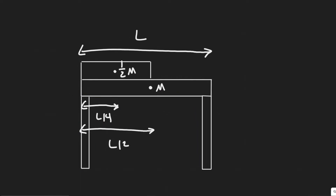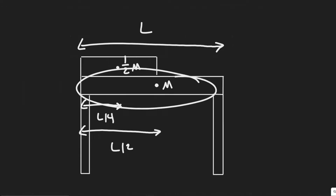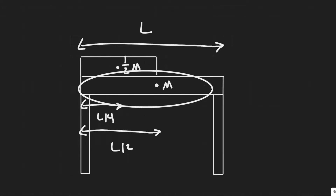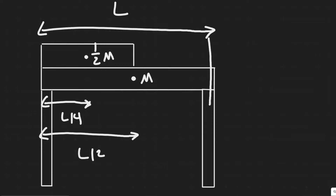I went ahead and drew our system here. We have these two support beams, and then we have this steel beam laying across here. Then half of an identical beam is laying on the side like this. They're asking us to find the vertical support force at each end — there's going to be a force pointing up on each end supporting it. We can call it FA for this one and FB for the other one. We're trying to solve for both of these forces.